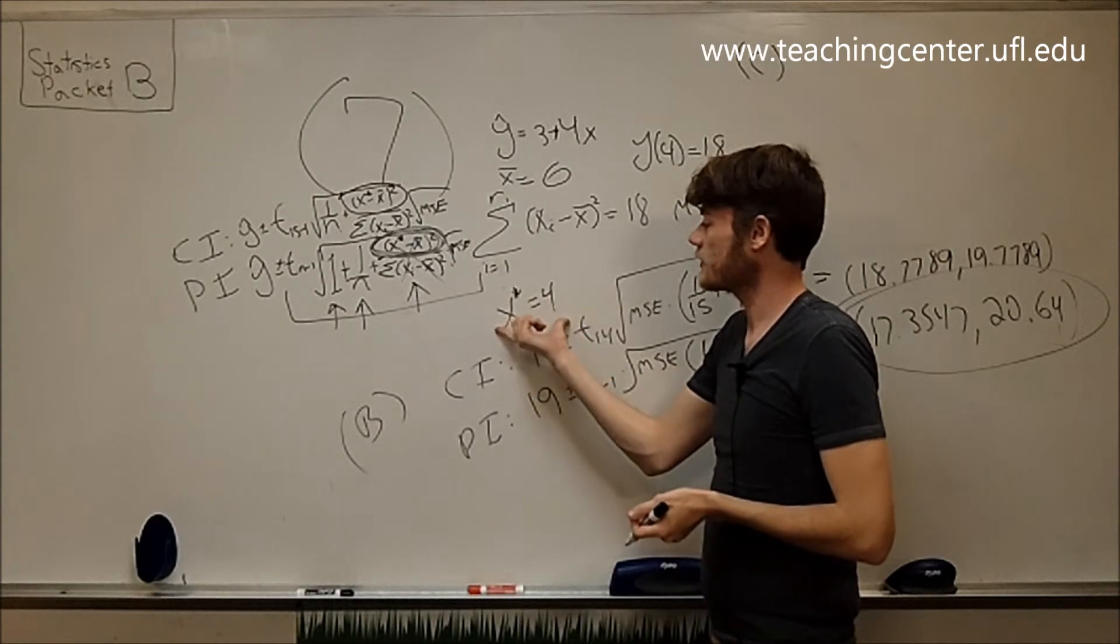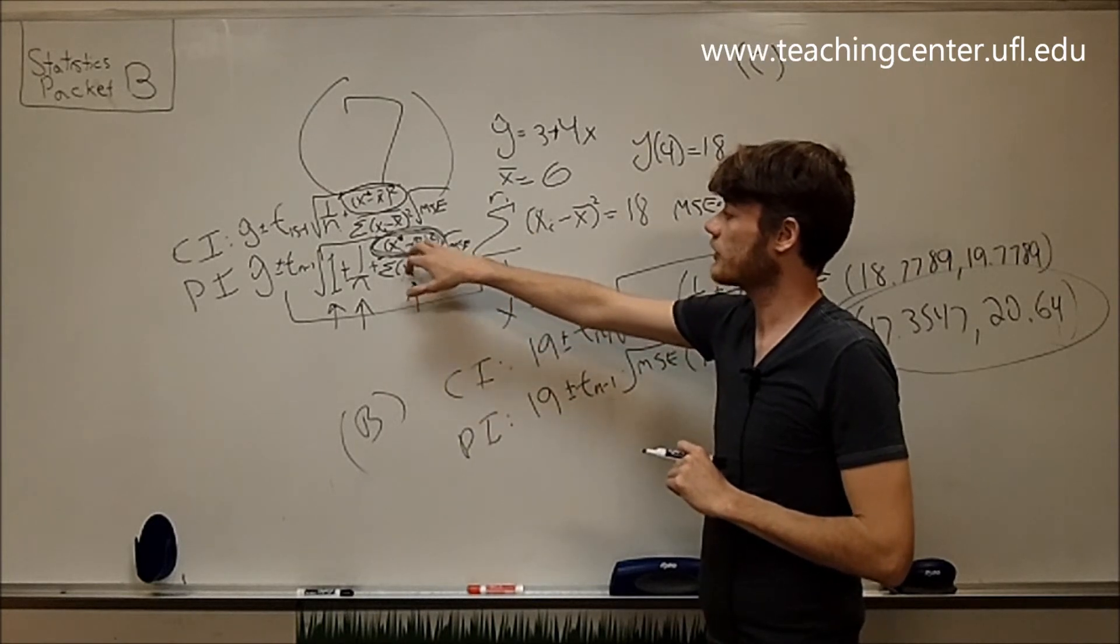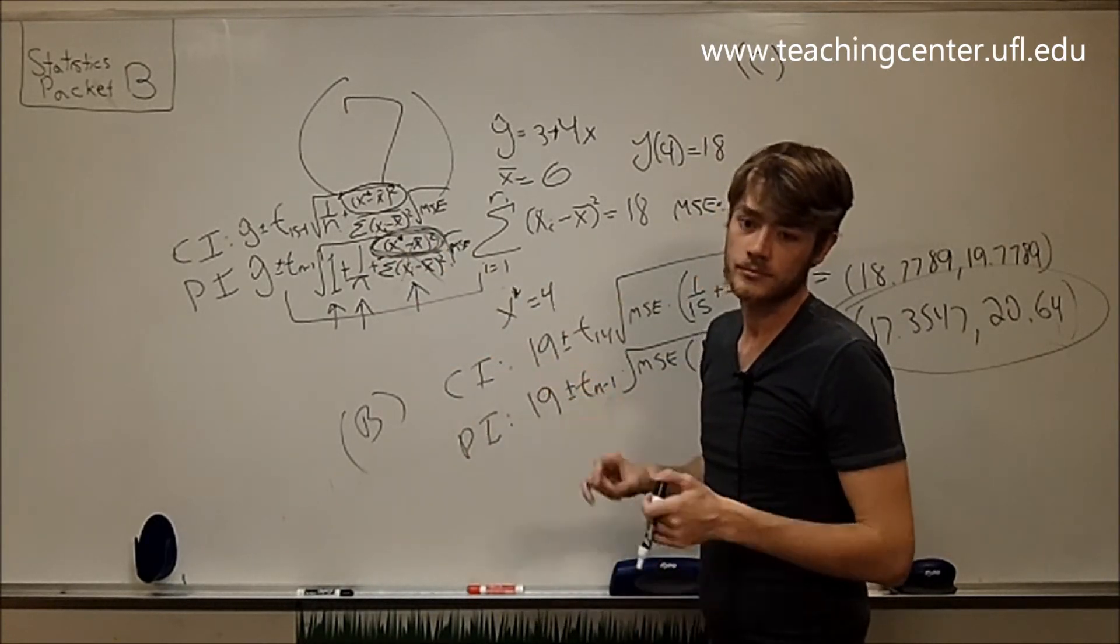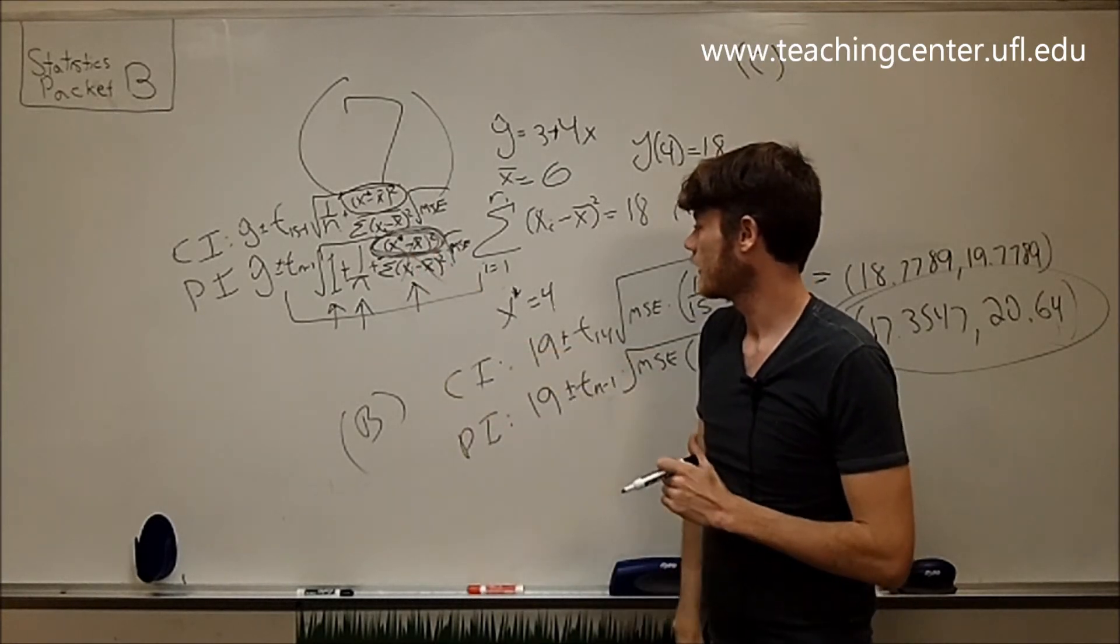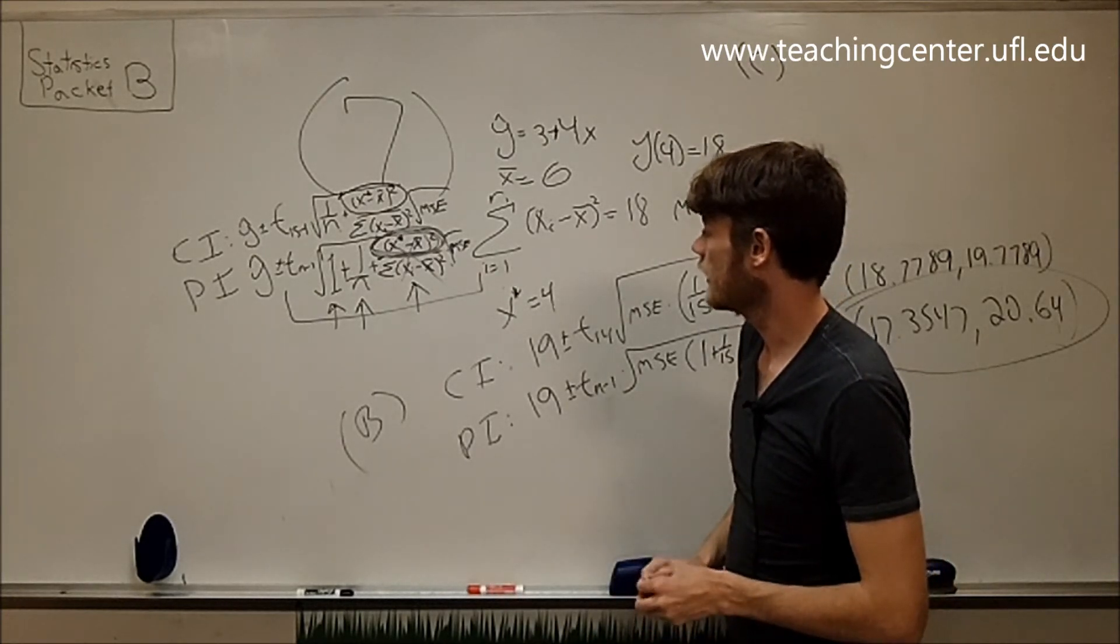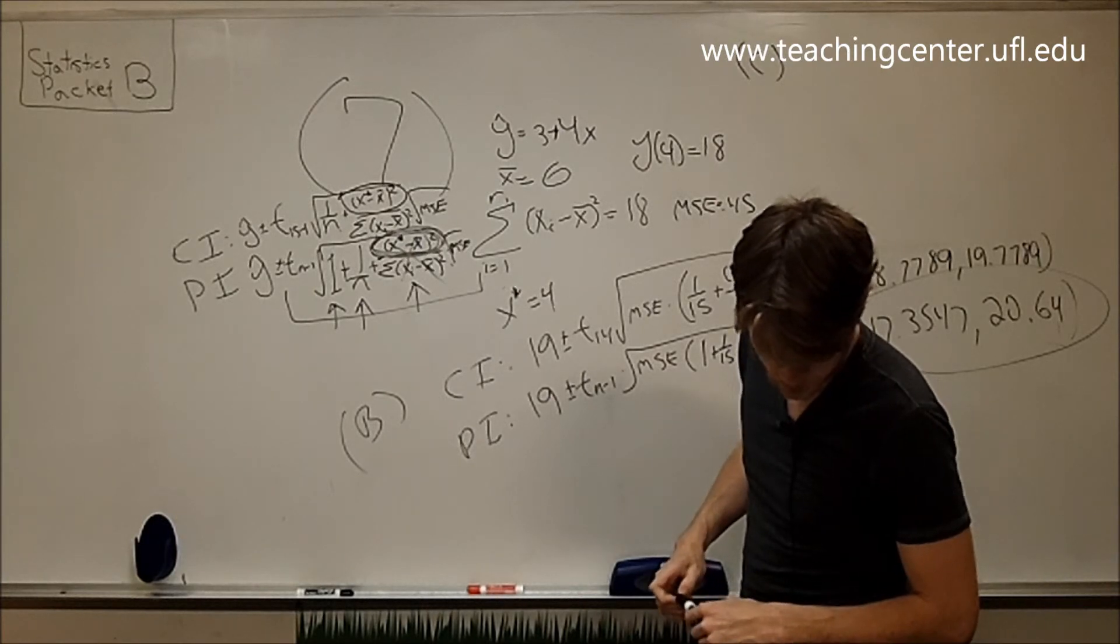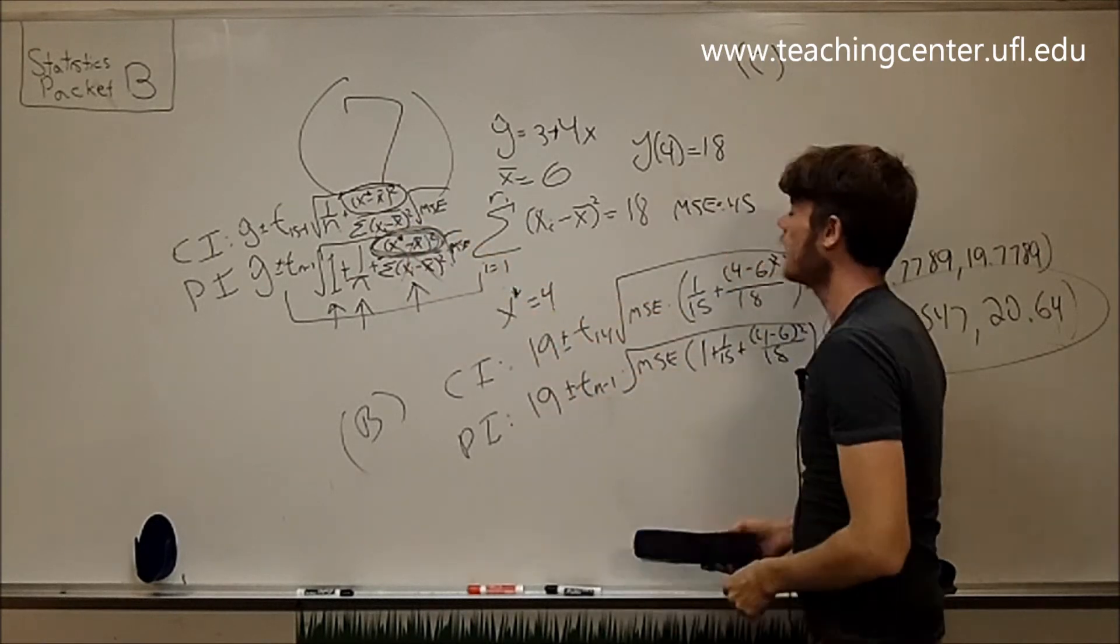So the, as compared to x star equals 4, that interval would be bigger because, and you can do this for yourself. You'll see. Because this term will turn out to be 36 over 18 instead of 4 over 18. So it'll be quite bigger. It'll actually end up being 2. And that's the end of the packet. And they'll both end up being wider because this term is the same. Some final thoughts.